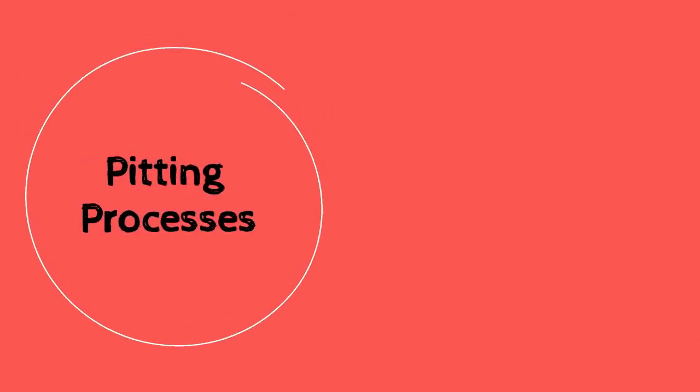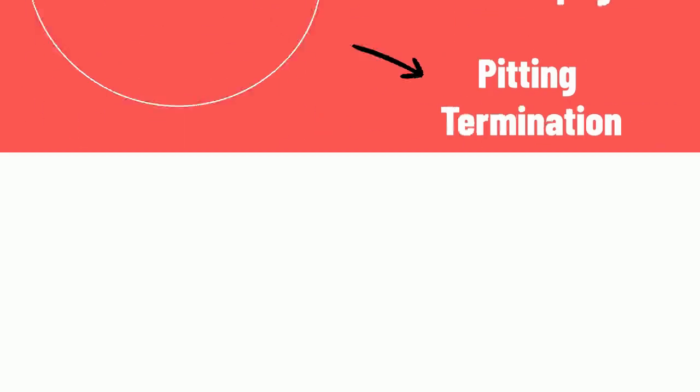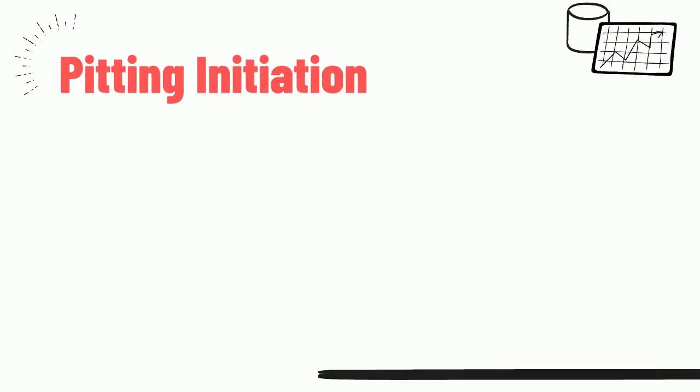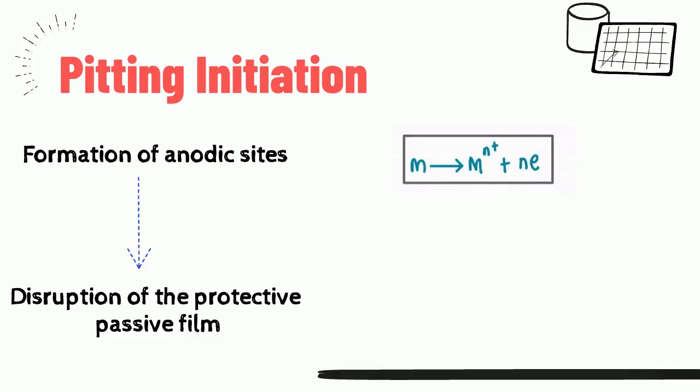Basically, there are three processes of pitting which are pitting initiation, pitting propagation, and pitting termination. During pitting initiation, the formation of anodic sites by disruption of the protective passive film on metal surface. The anodic metal dissolution reaction is represented by this equation and balanced by the cathodic reaction of oxygen.